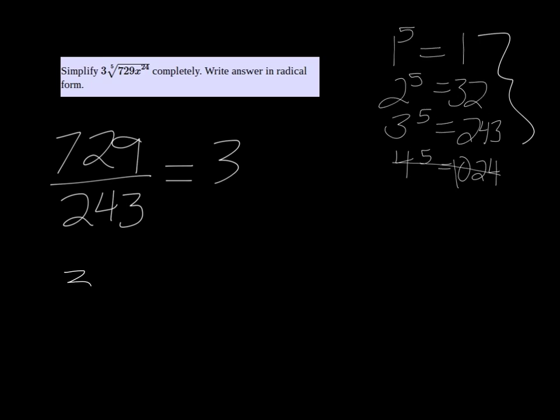So what we can do is rewrite it as 3 to the 5th root of 3 times 3 to the 5th power. And then for the x's, 5 will go into 24 four times.